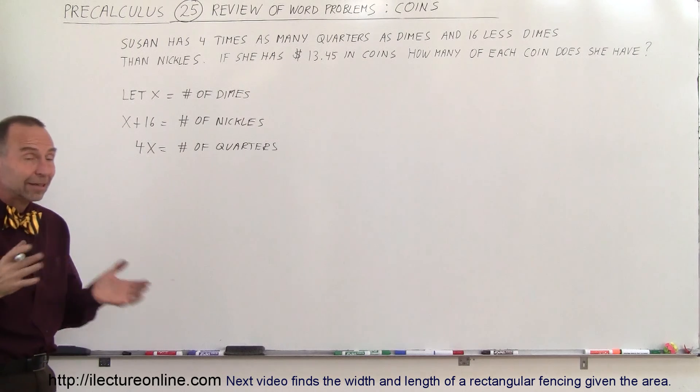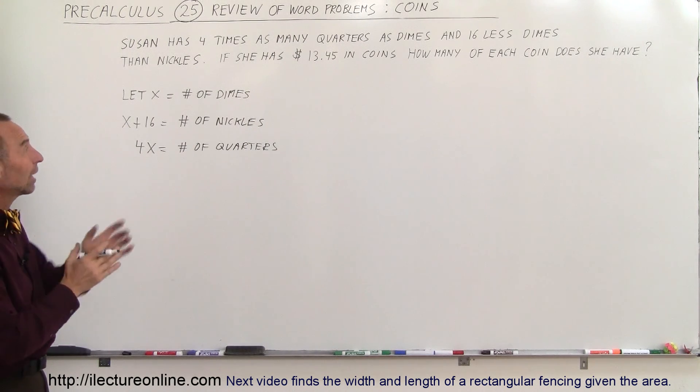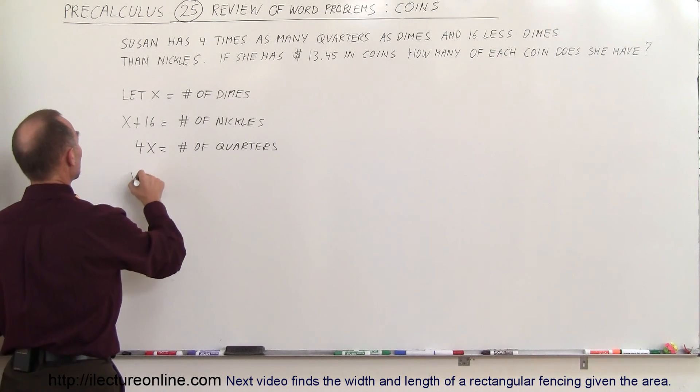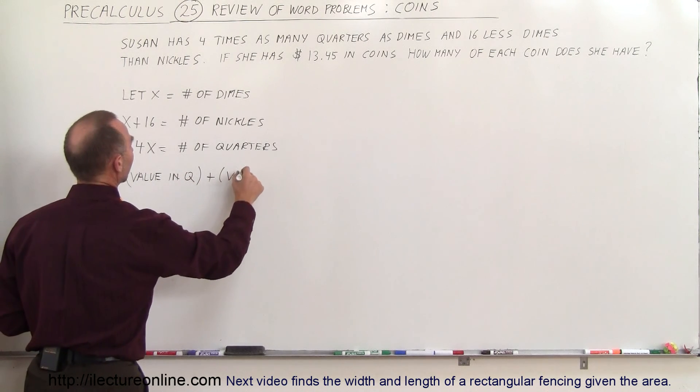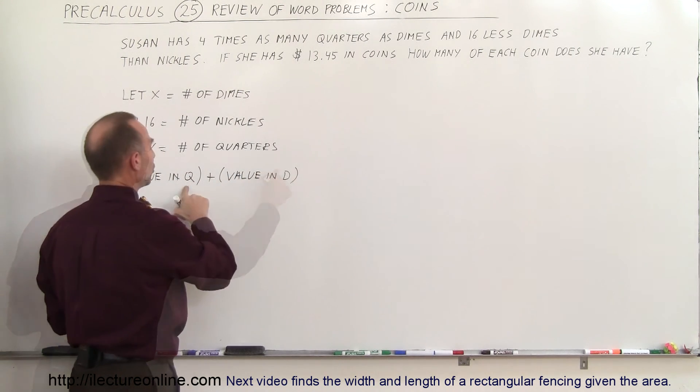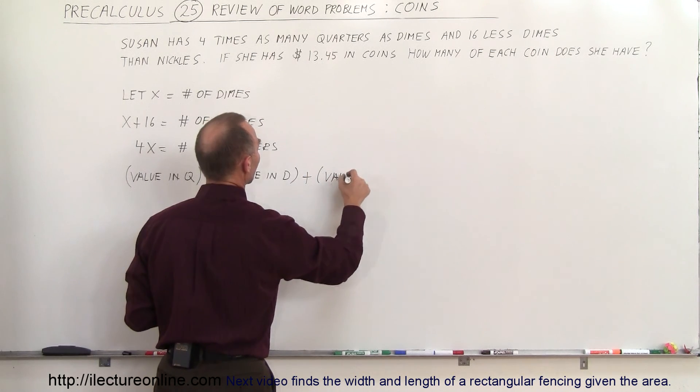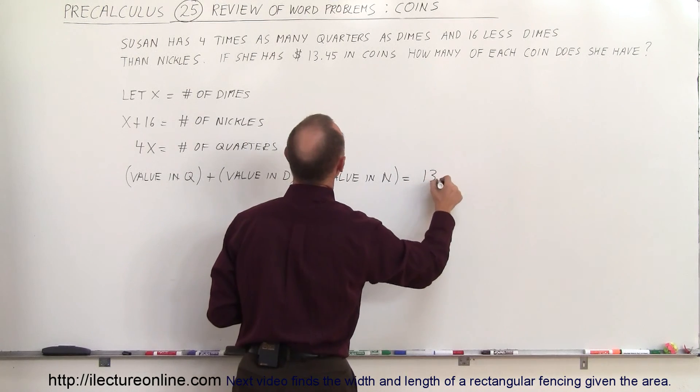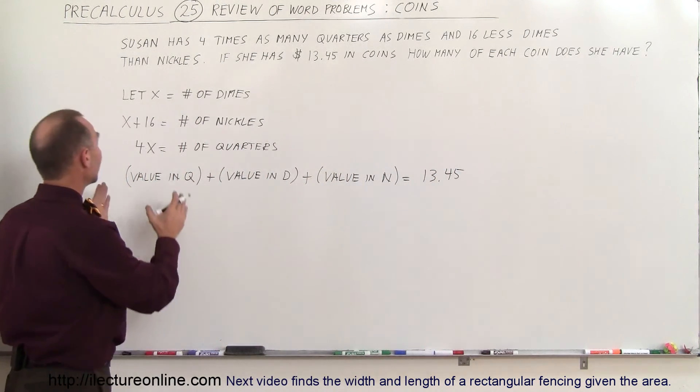And now we need an equation, an equation that takes all those quarters and dimes and nickels, adds them together, and that should add up to $13.45. So the value in quarters plus the value in dimes plus the value in nickels should add up to $13.45.